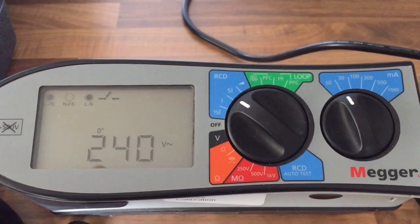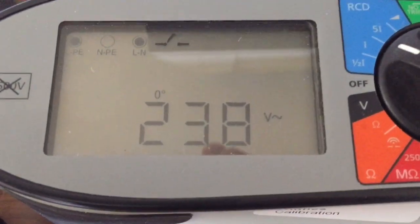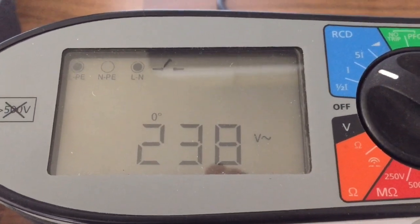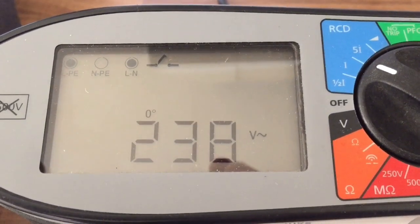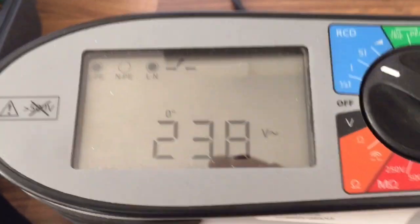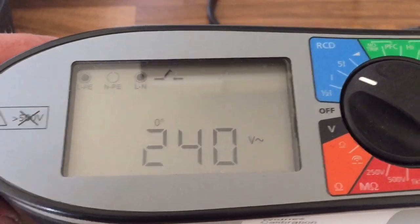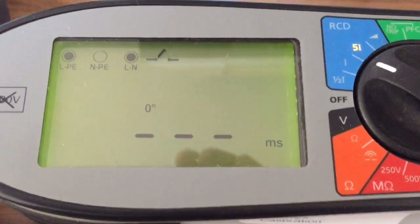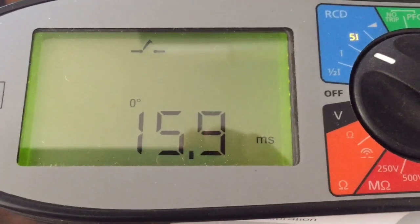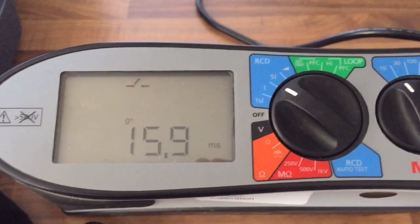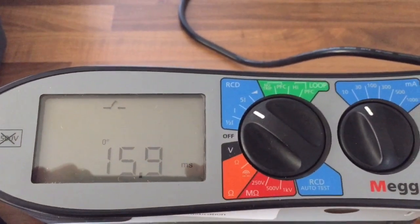So you can see I've got the instrument set up there for the five times test. I'm still on 30 milliamps but I'm on five times now, and you'll also see as well that I'm going to do this test on the zero with the intention of repeating it on the 180, but just for now I'm going to keep it simple. So here we're expecting it to be within 40 milliseconds. 15.9, so we're well in with that one. That was the additional protection test, and that refers back to the graph that I came in with in the first place.